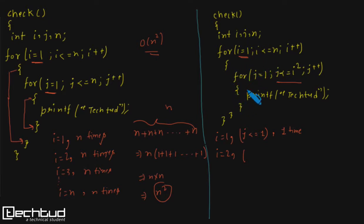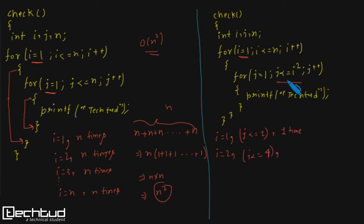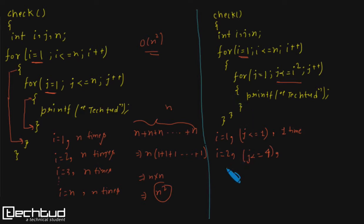For i equals to two, the condition becomes j less than or equal to two squared, which is four. Notice this difference — here the inner loop's bound is dependent on the value of the outer loop. So j runs from one until j exceeds four. For i equals to two, the print statement executes a total of four times.